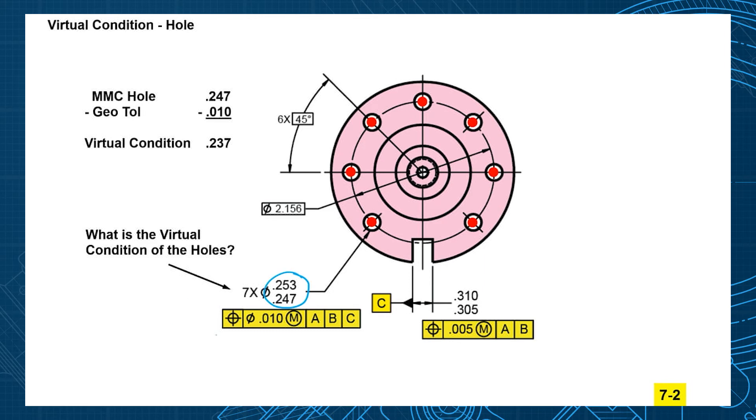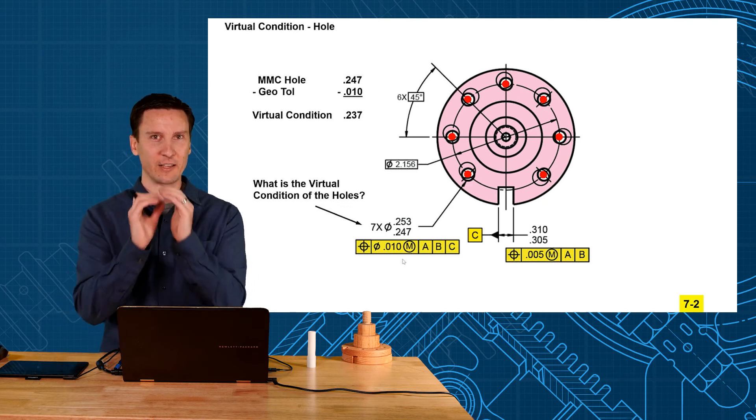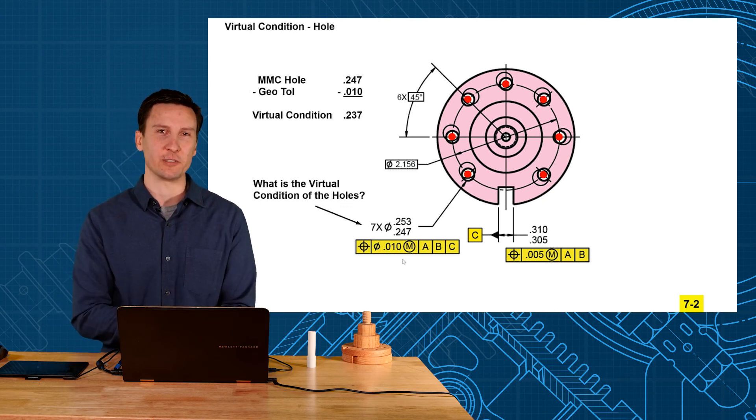But when those holes are off position 10 that means the holes could be drilled in many different positions. I don't know where it's going to be. But I have to account for that if it's an interchangeable part.